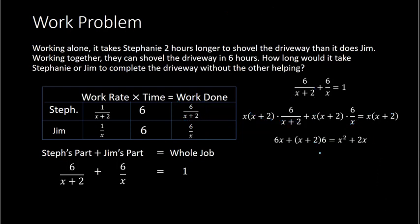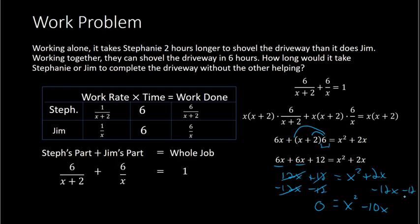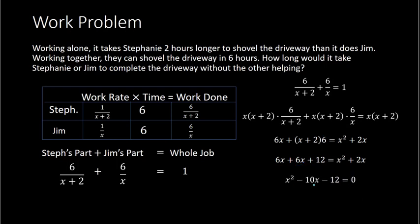We see everything typed up here. I distribute the 6 to both terms in x plus 2 times 6, getting 6x plus 12. Now we have 6x plus 6x plus 12 equals x squared plus 2x, which simplifies to 12x plus 12 equals x squared plus 2x. To set equal to 0, I subtract 12x from both sides, leaving 0 equals x squared minus 10x minus 12.